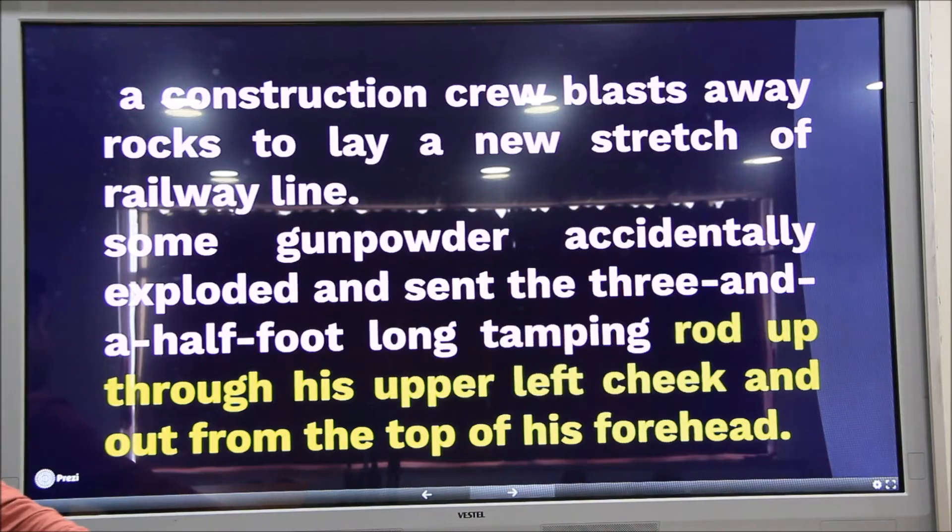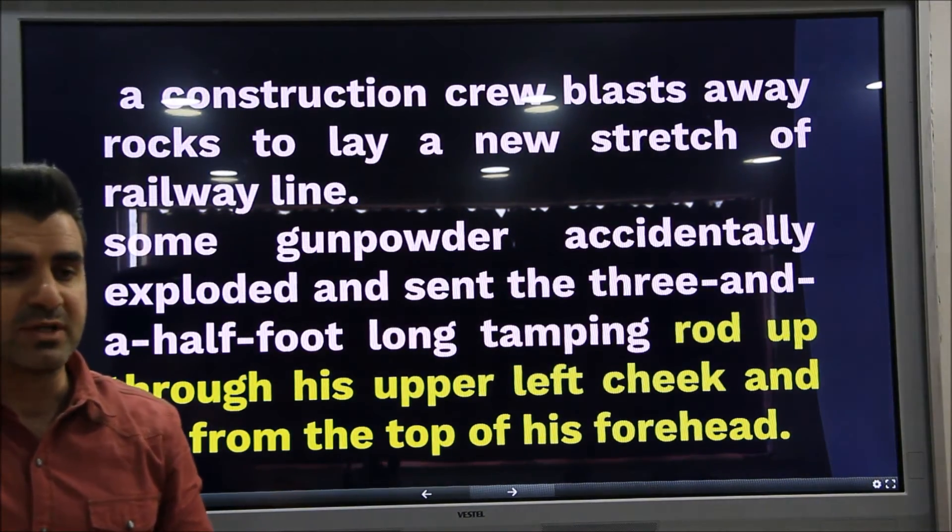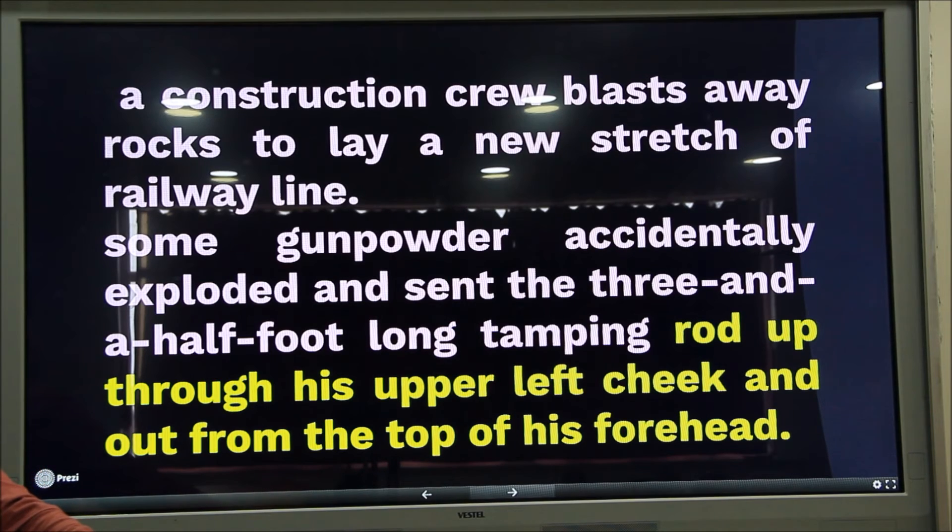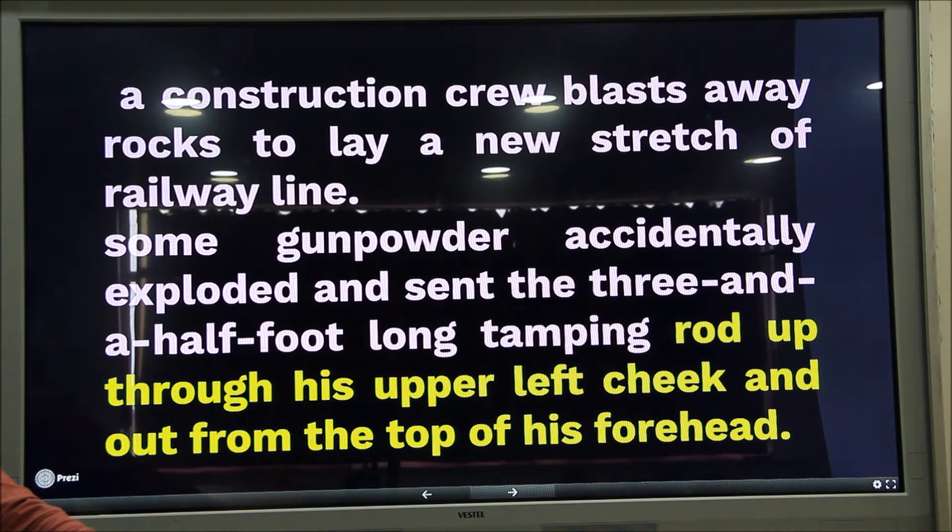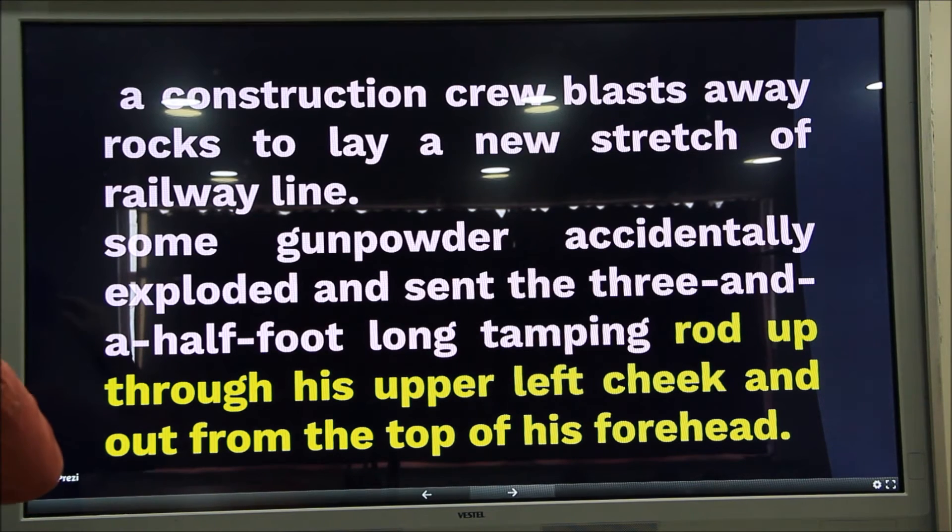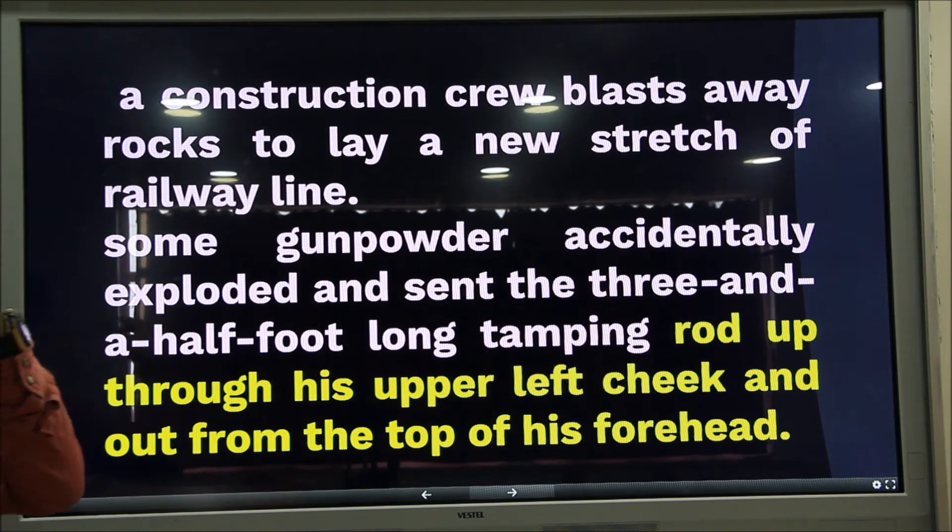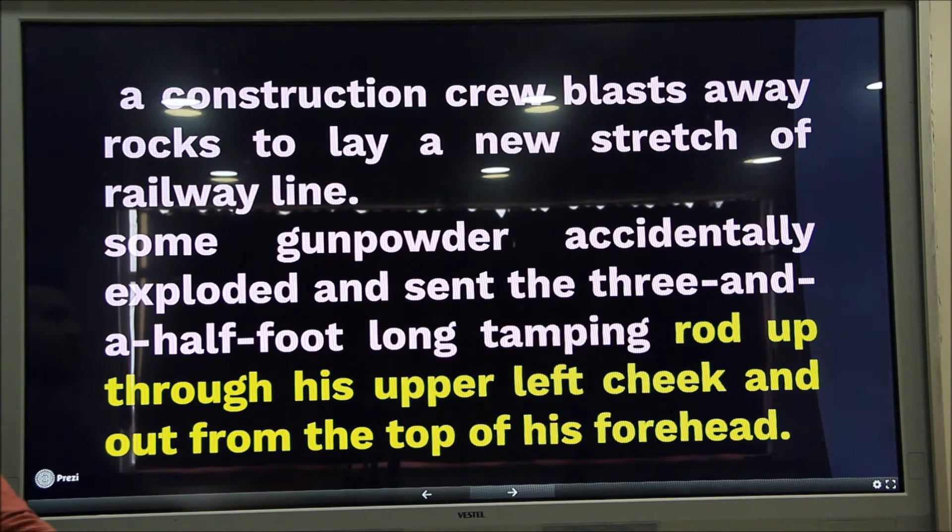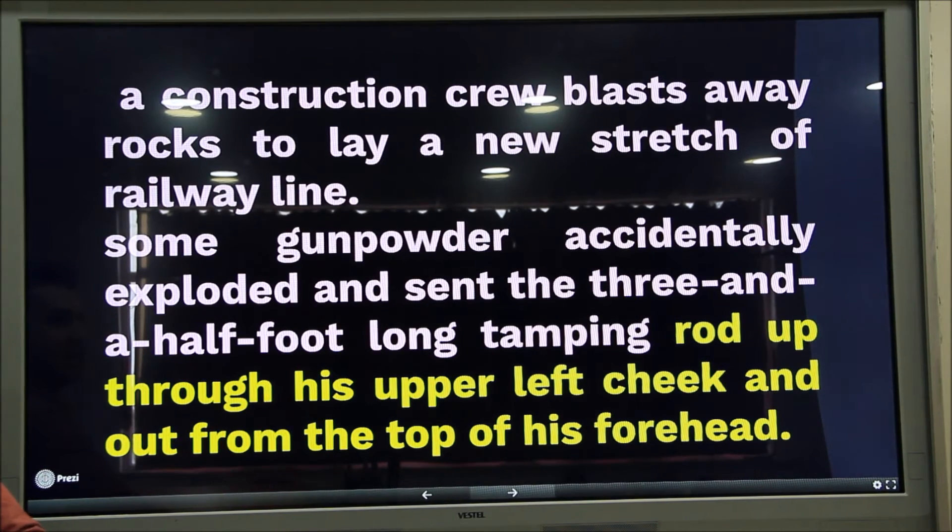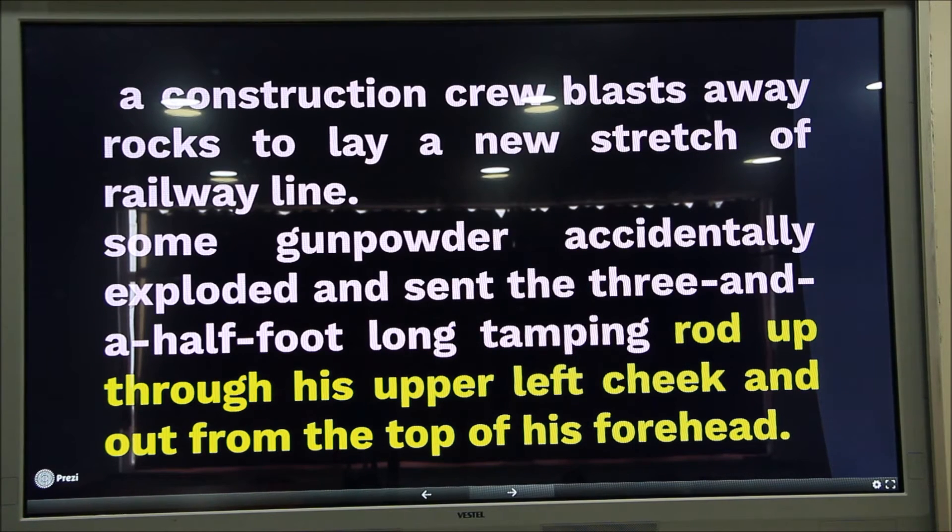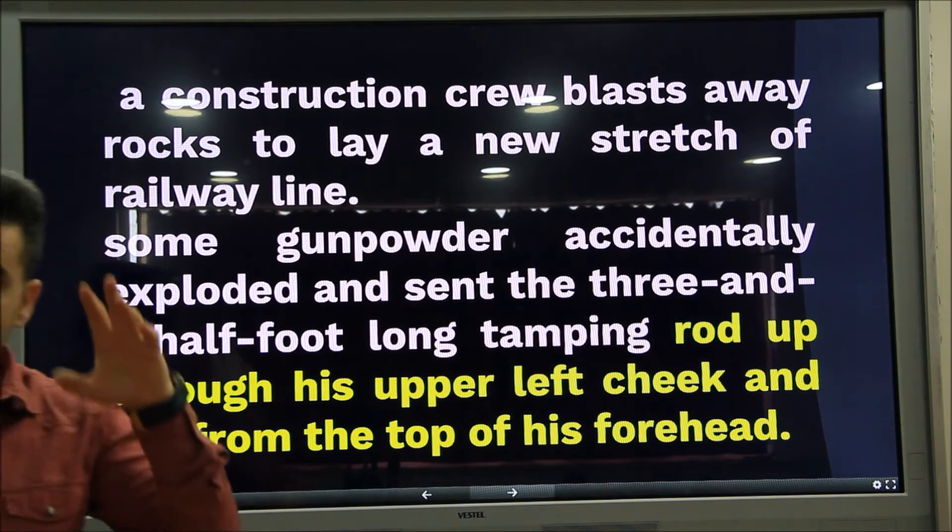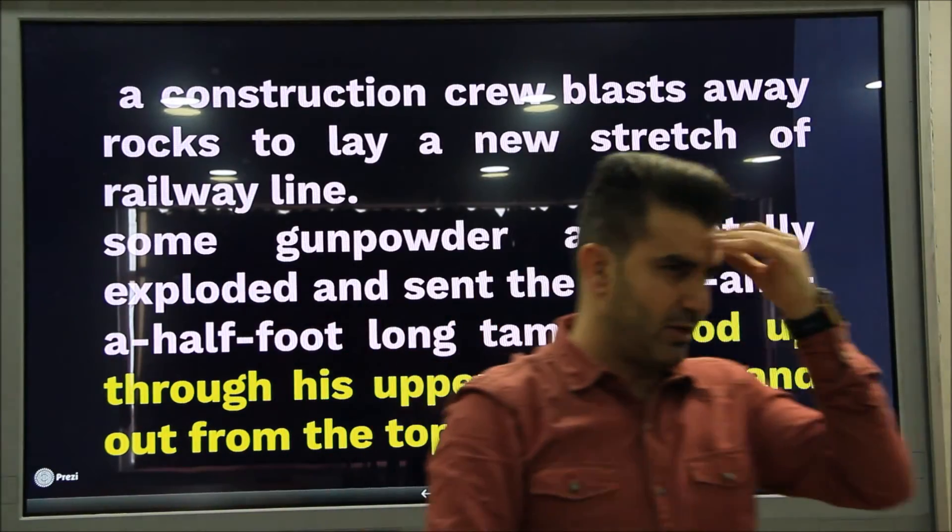Now, before going into our topic, you see, there is a story in your book. This story is about a man who works in a construction area and injured by a rod going through his upper cheek, left upper cheek and out of his forehead. A construction crew blasts away rocks to lay a new stretch of railway line. Some gunpowder accidentally exploded and sent a three and a half foot long tamping rod up through his upper left cheek and out from the top of his forehead. Can you imagine? Upper left cheek and then comes somewhere here, out of here.